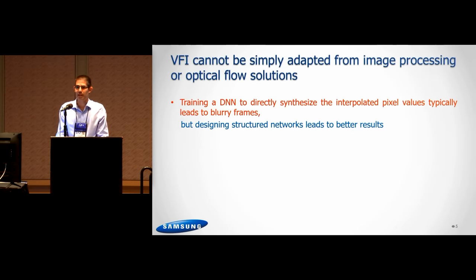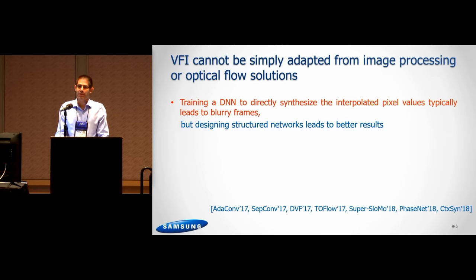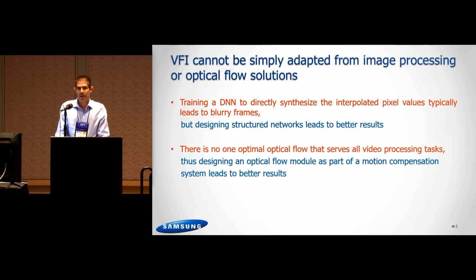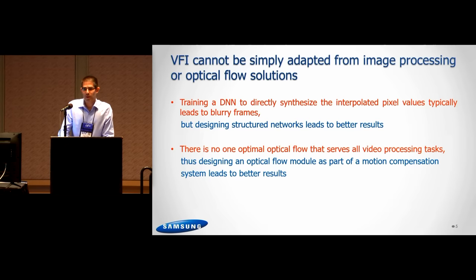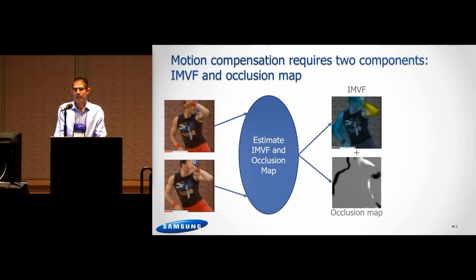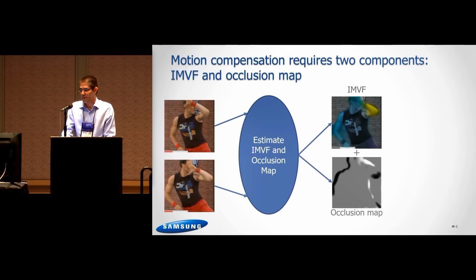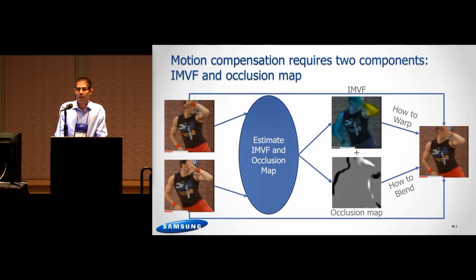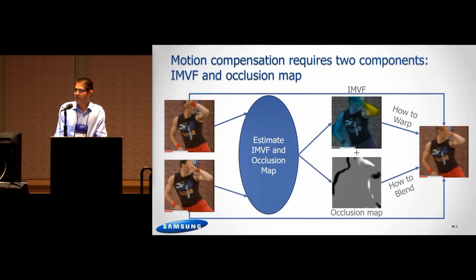To avoid blurry outputs, it is better to design structured DNNs instead of directly synthesizing output pixel values. The most common structure is designing the DNN as a motion compensation system, where optical flow is one component learned as part of the entire system. A motion compensation system has two ingredients: an interpolated motion vector field telling you from where to take pixel values, and an occlusion map telling you how to blend those pixel values. Once you have these, you can warp the input frames together, blend the warped frames, and synthesize the middle frame.